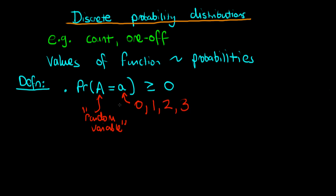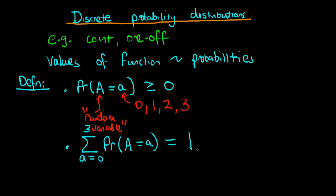Firstly, we require that the probability values are always greater than or equal to zero. Secondly, we require that the sum of all possible values of this probability distribution — in the case of the apples, summing from A equals zero to A equals three — must be equal to one. This second condition simply says that one of the possible events must occur: it's either zero, one, two, or three apples, and no other outcomes are possible. The definition of a discrete probability distribution just requires these two conditions to be satisfied.